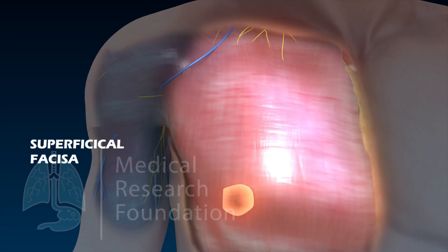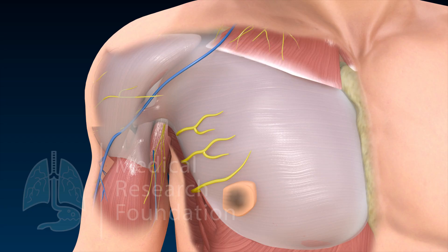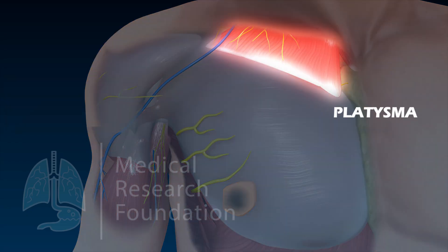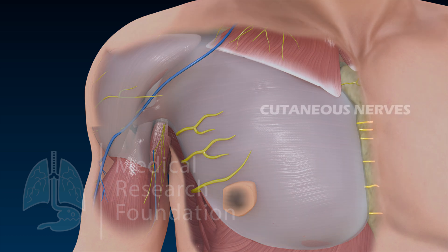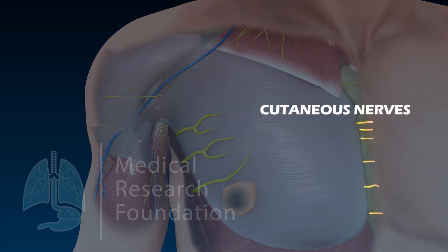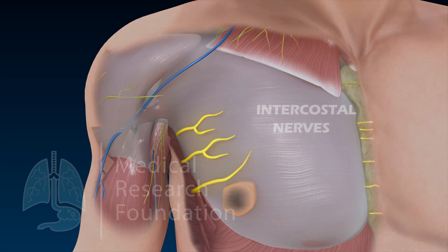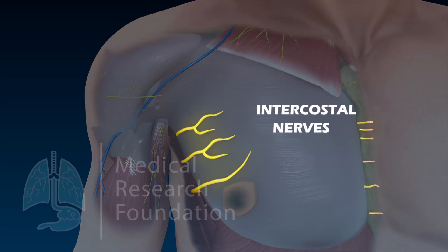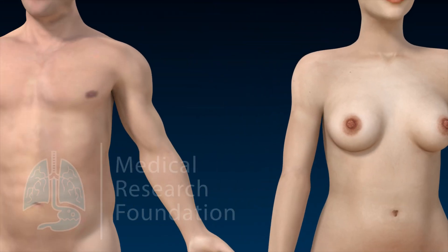The superficial fascia is seen after the skin of the pectoral region is removed. Contents within the superficial fascia include the platysma, cutaneous nerves derived from the cervical plexus and intercostal nerves, and the breast.